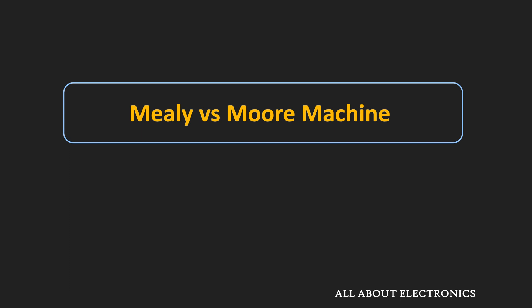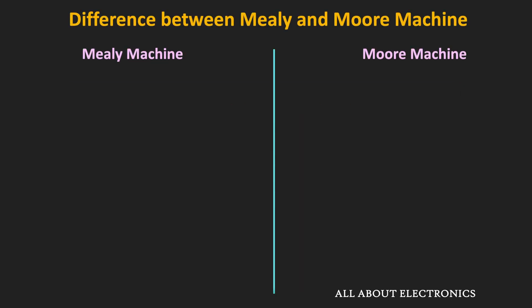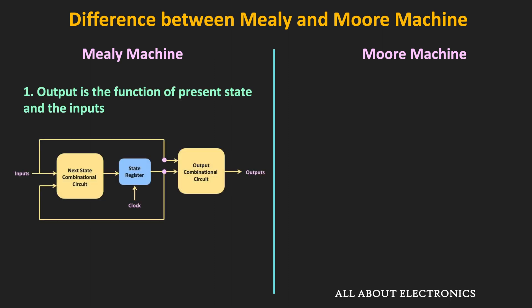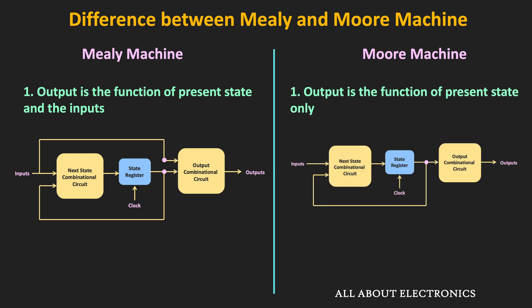In the Mealy machine, the output is a function of the inputs and the present states of the memory elements. While in the Moore machine, the output is a function of only the present state of the memory element.